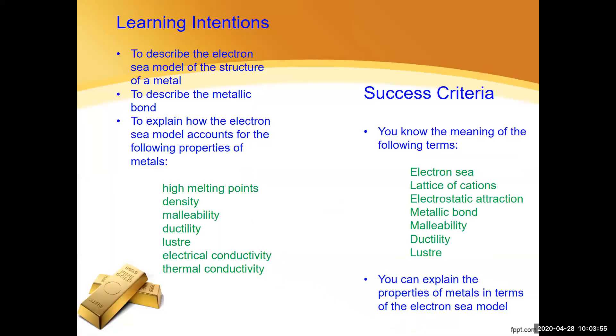Our learning intentions for today: we are going to learn to describe the structure of the metal in terms of what's called the electron sea model. We will describe what a metallic bond is and explain how the electron sea model can account for metals having high melting points, high density, malleability, ductility, luster, electrical conductivity, and thermal conductivity.